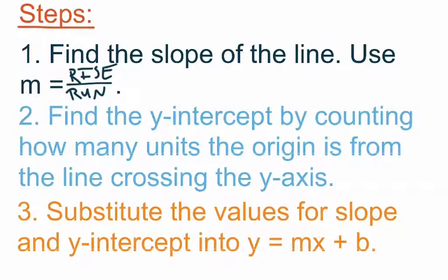Our second step is to find the y-intercept by counting how many units the origin is from the line crossing the y-axis. Starting at the origin, we either count straight up or straight down until we get to the point where the line and the y-axis meet — that will be the value for b, the y-intercept. Then our third step is to write the equation: substitute the values for slope and y-intercept into slope-intercept form, y equals mx plus b.